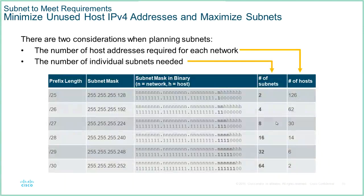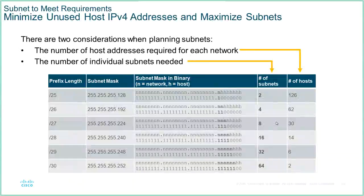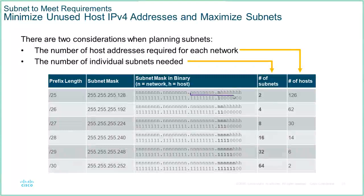We want to minimize the wastage of addresses when we do subnetting. We can always borrow bits to create our subnets — it doesn't matter where we start, as long as we're starting from a network already in use. In this case it was a /24, and we're breaking it up into smaller parts.